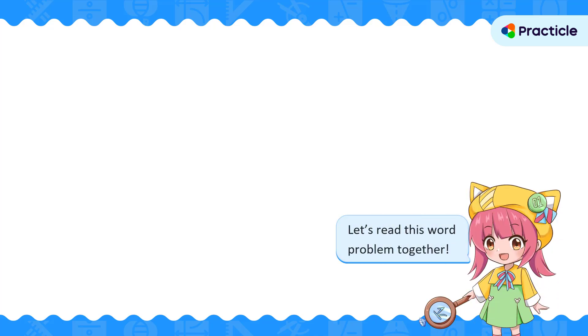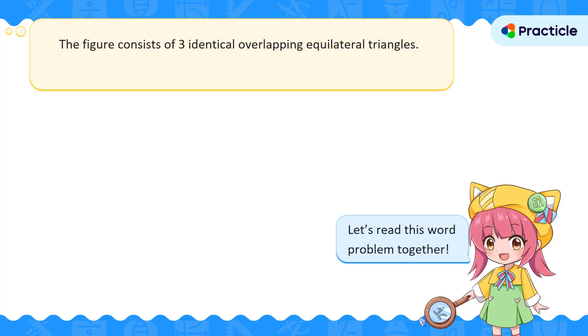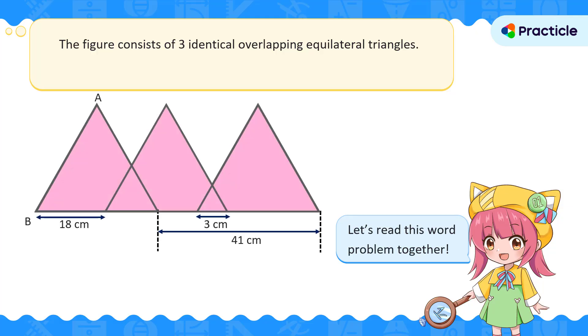Ready for a fun PSLE 2025 math puzzle? This challenge looks like a little art project. We've got a figure that is made up of three identical equilateral triangles with some parts overlapping. Our job is to find the length of AB.